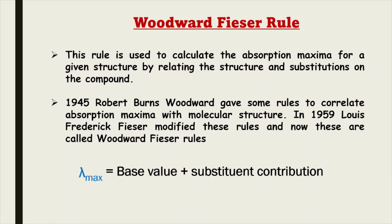Woodward-Fieser rule is used to calculate the absorption maxima for a given structure by relating the structure and substitutions on the compound. In 1945, Robert Burns Woodward gave some rules to correlate absorption maxima with molecular structure. In 1959, Louis Frederick Fieser modified these rules, and now these rules are known as the Woodward-Fieser rule.